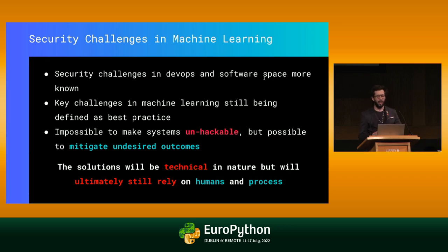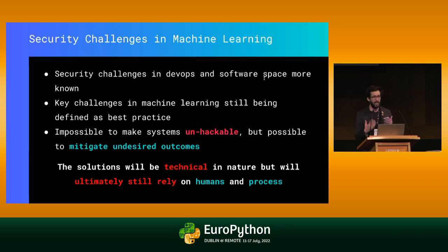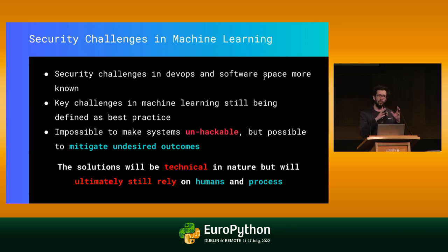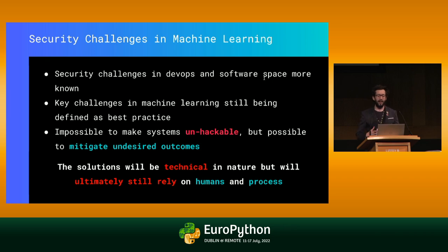One of the key interesting things is that the security challenges in the DevOps and traditional software space are very actively explored — there are a lot of resources around them. However, the key challenges in machine learning itself are still being explored. There's a lot of content around how to use machine learning in security, things like spam detection and malware detection, but best practices of security in machine learning are not as defined.